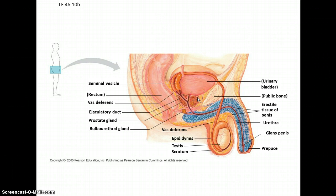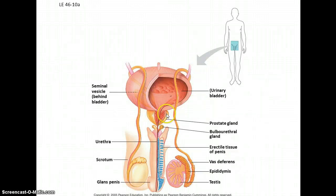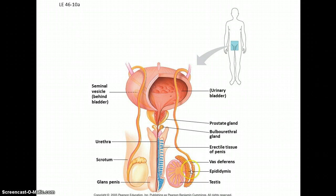The prostate gland in older men often becomes enlarged and can lead to prostate cancer. In the testes there are all these tubes — the seminiferous tubules — where sperm cells are produced. The epididymis is extremely long; it takes several days for a single sperm cell to complete the journey from the testes out of the body. Sperm that aren't used will simply be reabsorbed — recycled — by the body.